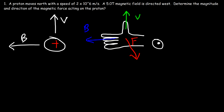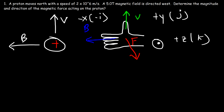The velocity is in the positive Y direction, which is the same as positive J. The magnetic field is in the negative X direction, which is the same as negative I. The magnetic force is coming out of the page, so that's the positive Z direction, which is the same as positive K. Now let's use another technique — you may want to watch another video entitled 'Magnetic Force on a Current Carrying Wire' for more examples.